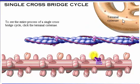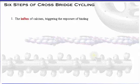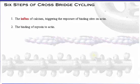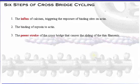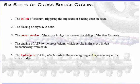As you've just seen, crossbridge cycling is a continuous event. For the purposes of easier understanding, let's break it down into six separate steps. Step 1: the influx of calcium, triggering the exposure of binding sites on actin. Step 2: the binding of myosin to actin. Step 3: the power stroke of the crossbridge that causes the sliding of the thin filaments. Step 4: the binding of ATP to the crossbridge, which results in the crossbridge disconnecting from actin. Step 5: the hydrolysis of ATP, which leads to the re-energizing and repositioning of the crossbridge. And step 6: the transport of calcium ions back into the sarcoplasmic reticulum.